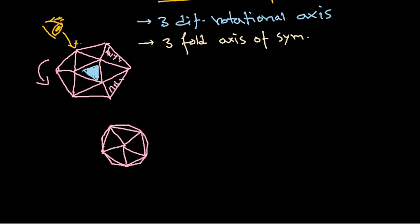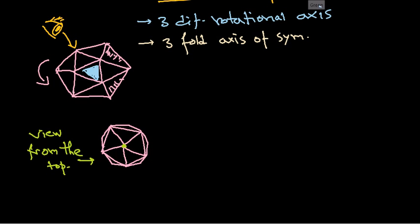If we draw it carefully from the top view, you can see three different lines. Looking at this picture, by focusing on another point — count them: one, two, three, four, five — so how many folds of symmetry do we get? We get a 5-fold axis of symmetry. In the previous view we got three, but from the top we get five.